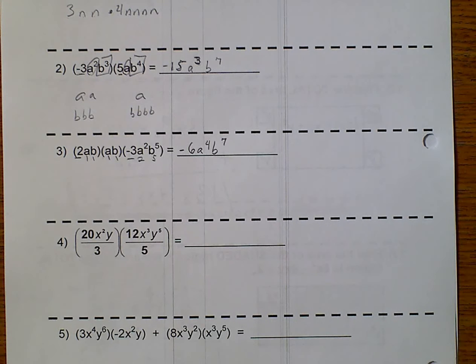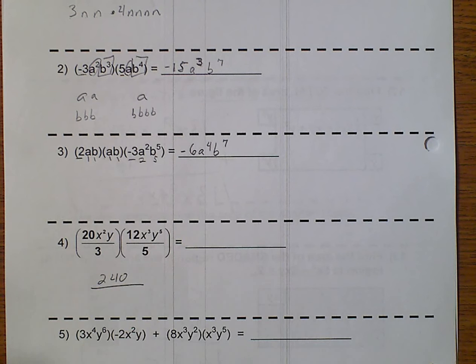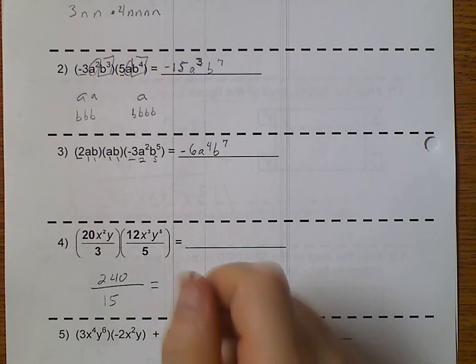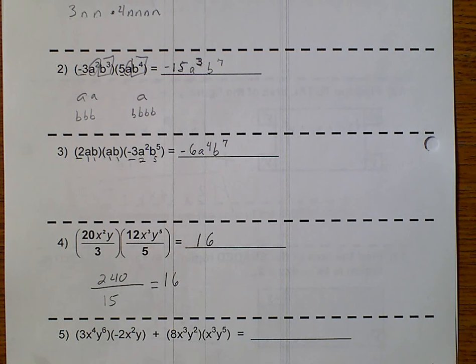Well, this is kind of complicated. I kind of want to do this in multiple steps. So, I'm going to go ahead and do 20 times 12. And that gives me 240. Over 3 times 5 is 15. And 240 over 15 equals 16. Just kind of get that out of the way.